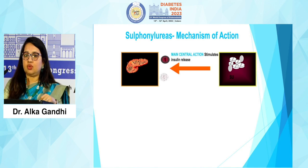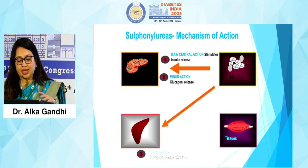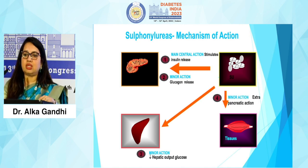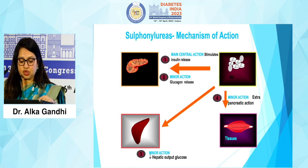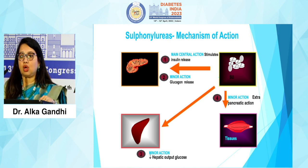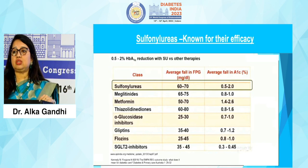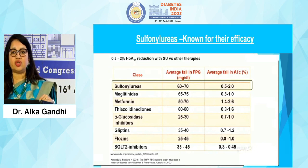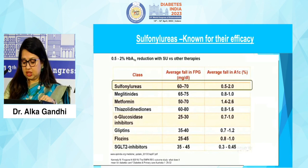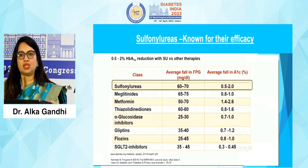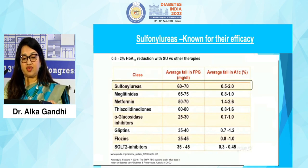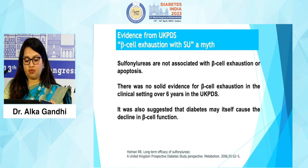If we consider efficacy, SU is a golden molecule. It has multiple actions — the main action is increasing insulin secretion from the beta cell, but it also decreases glucagon release, has extra-pancreatic effects on peripheral tissues, and decreases hepatic glucose output. The next best HbA1c reduction after insulin is with SU. Comparing all oral agents, after metformin, the highest HbA1c reduction is with sulfonylurea: an average fall in FBG of 60 to 70 mg/dL and fall in A1c of 0.5 to 2 percent.